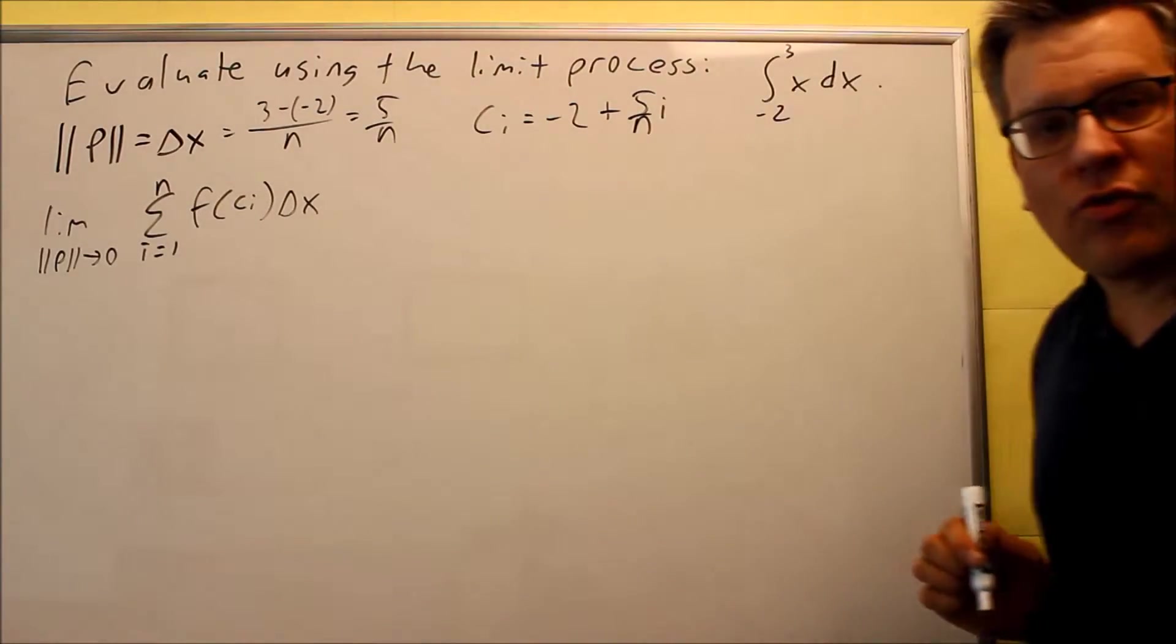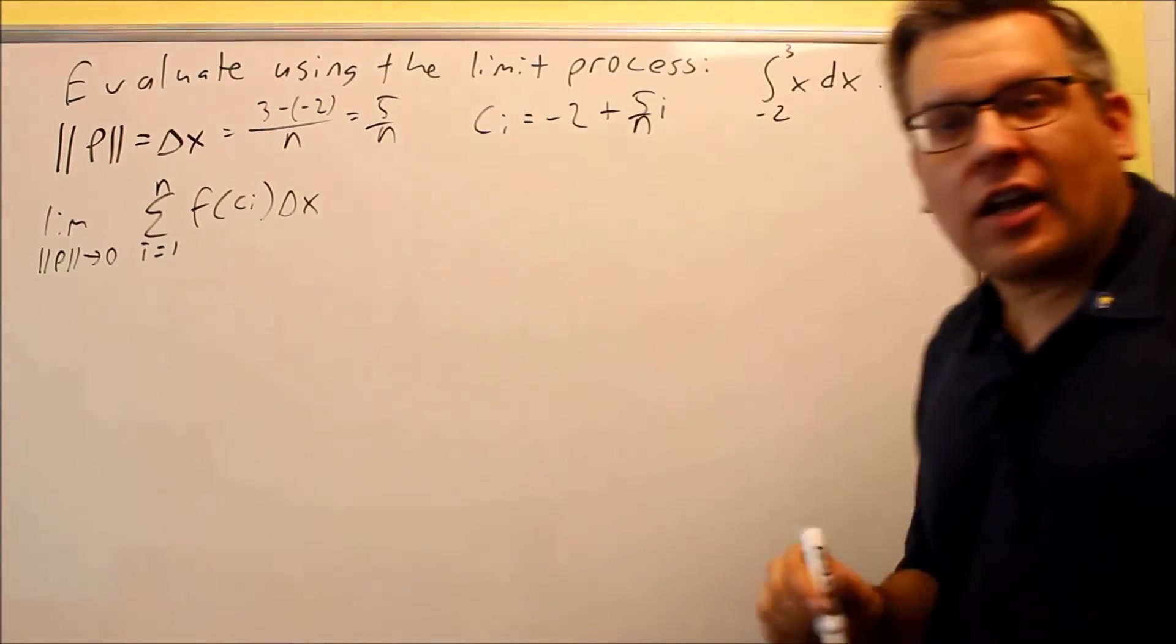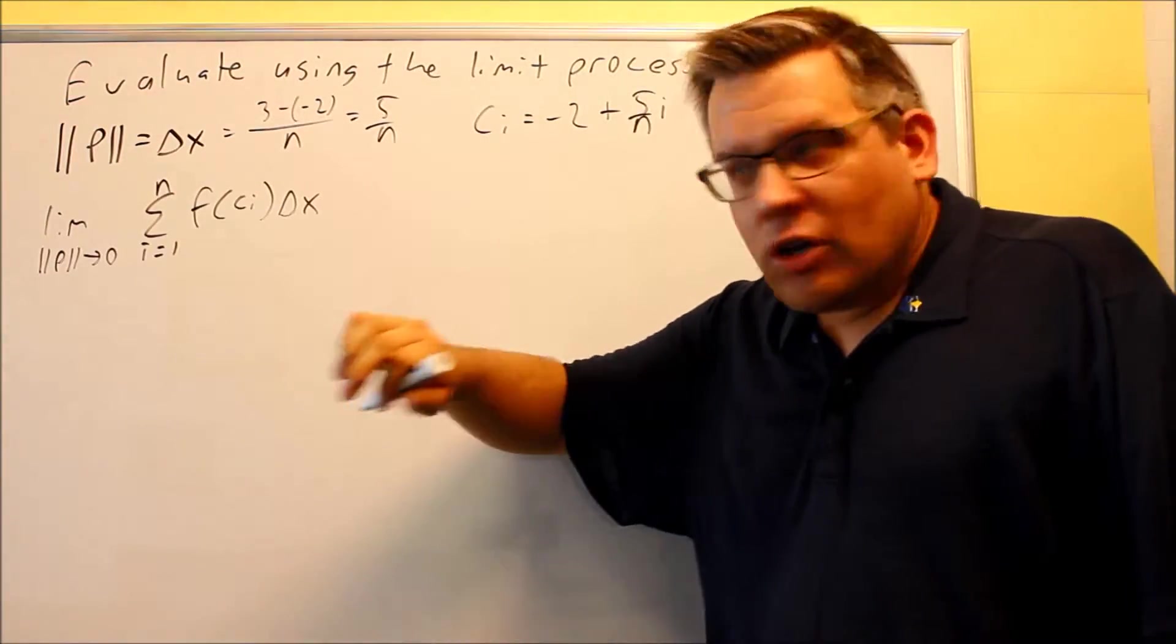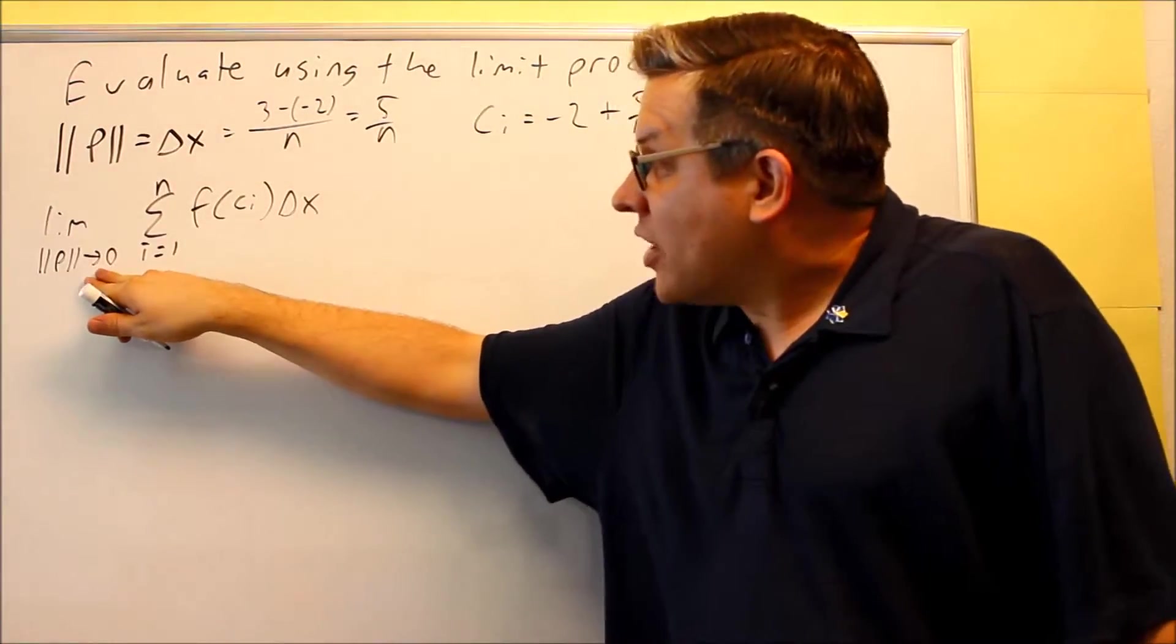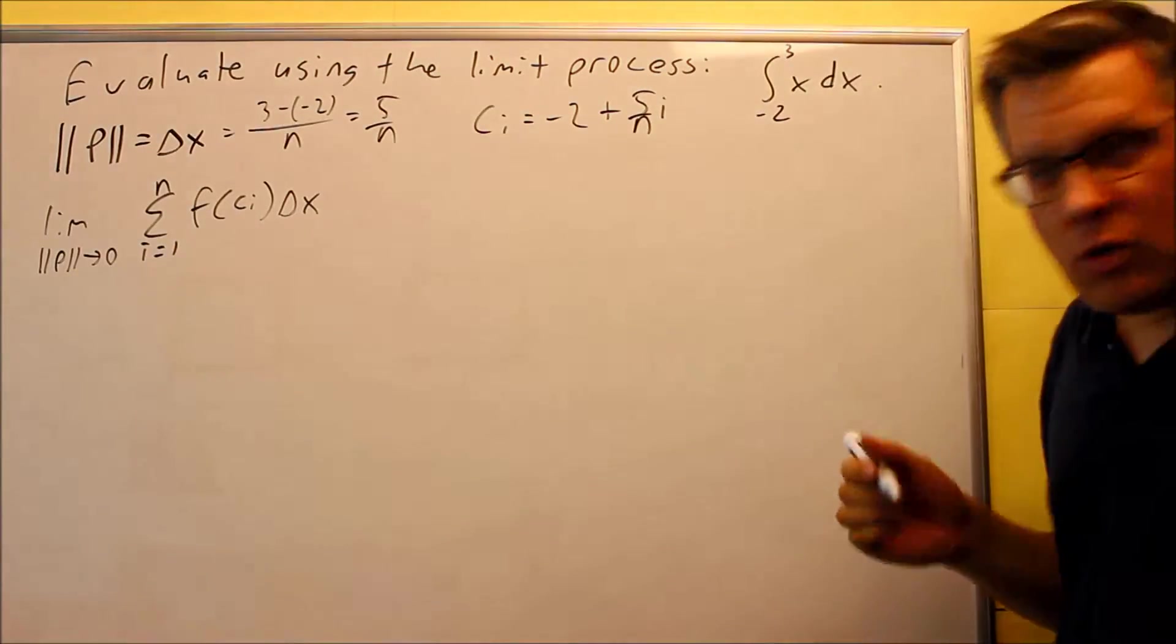That's the actual formula that we're going to be using here, and that's the same one that we used before in a previous section, except that instead of having the norm go to 0, we had n going to infinity. So, because we mentioned that that's true in the previous video, I mentioned that that implies that if you have norm going to 0, that means automatically we know that n goes to infinity.